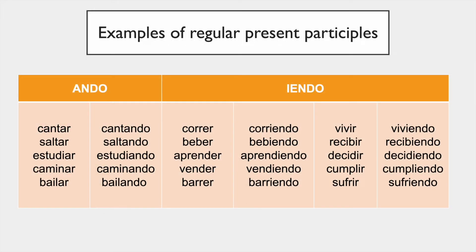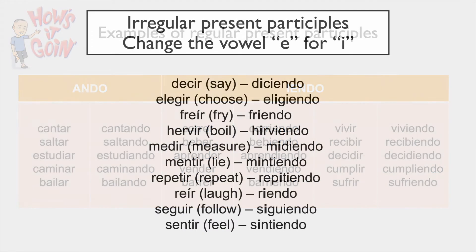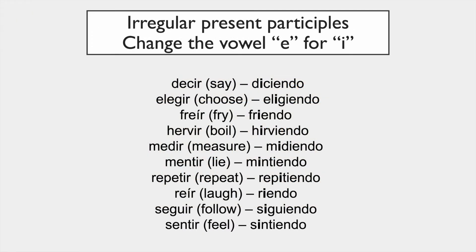For AR verbs, 'cantar' becomes 'cantando,' 'saltar' becomes 'saltando,' and so on. ER and IR verbs change slightly differently: 'correr' becomes 'corriendo,' 'vivir' becomes 'viviendo.' There are also some irregular verbs which you need to remember, but you will probably remember them by practicing.